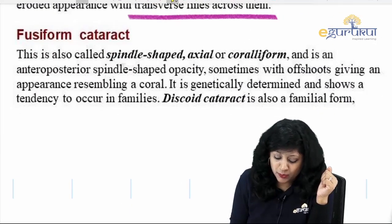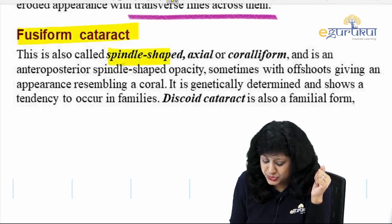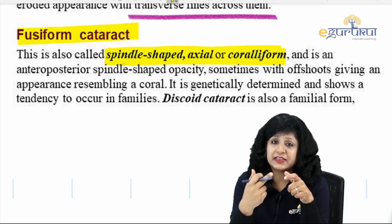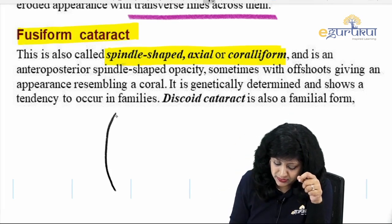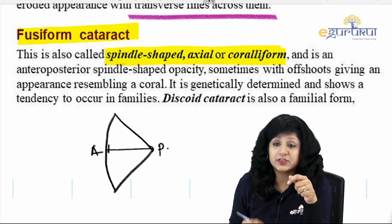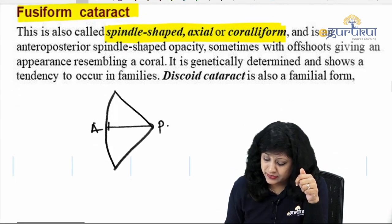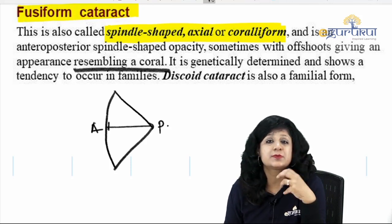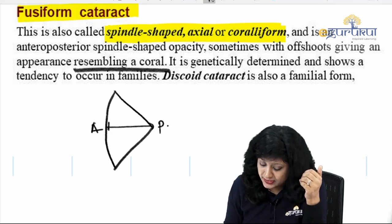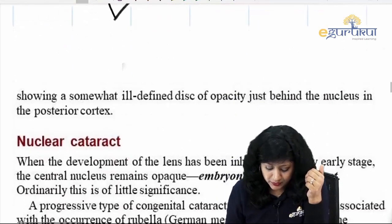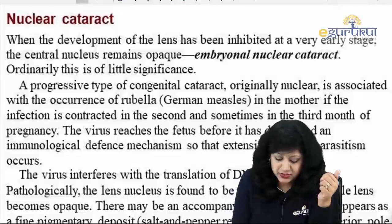The next cataract is the fusiform cataract — also called spindle-shaped, axial, or corolliform. The spindle is anteroposterior rather than equatorial. It gives a resemblance to coral, which is why it is also called the coral cataract. It is genetically determined. Discoidal cataract is also a familial form.